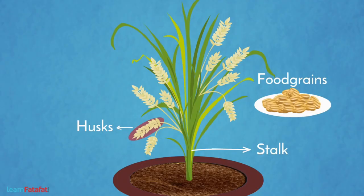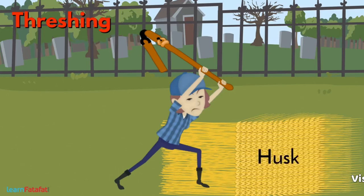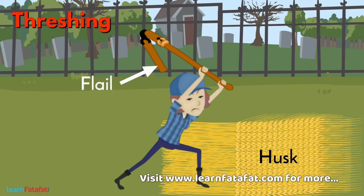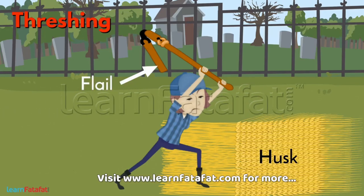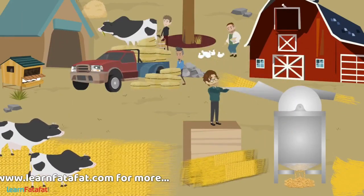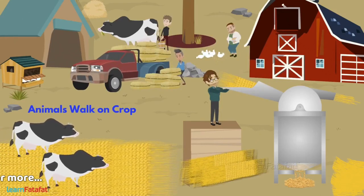So, to separate food grain from the plant body and husk, we use threshing. In this process, the part of the plant where husks are located is beaten using a wooden stick or flail. Other ways include allowing animals to walk on the crop, or by using machines.